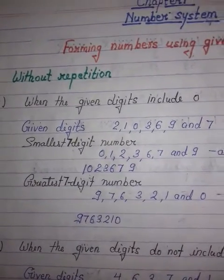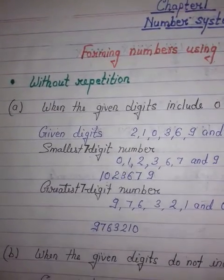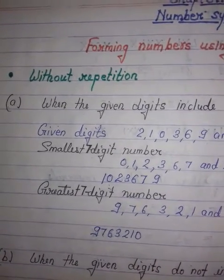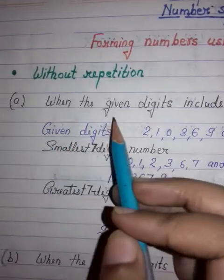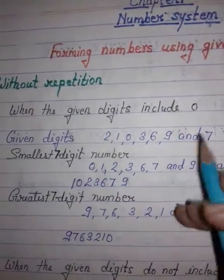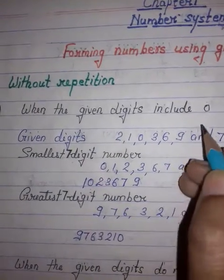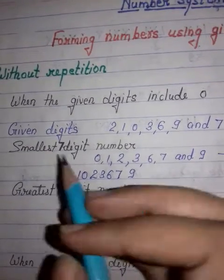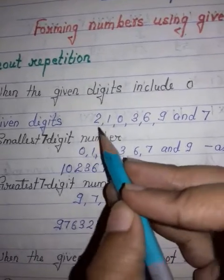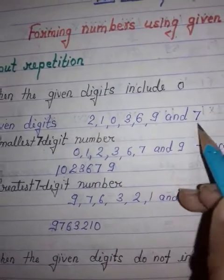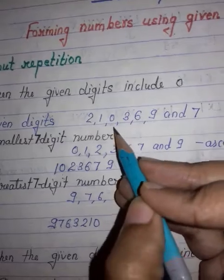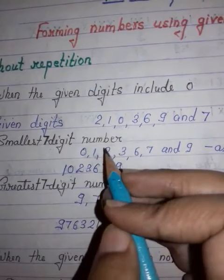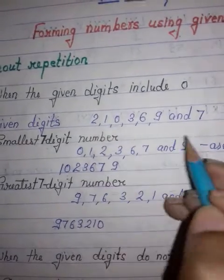Let us see the first one — without repetition. In this, there are two possibilities. First one is when the given digits include zero. Here the given digits are 2, 1, 0, 3, 6, 9, and 7. There is a zero here. We have to form the smallest seven-digit number and the greatest seven-digit number using these digits.